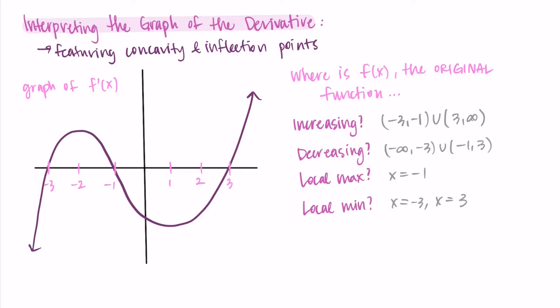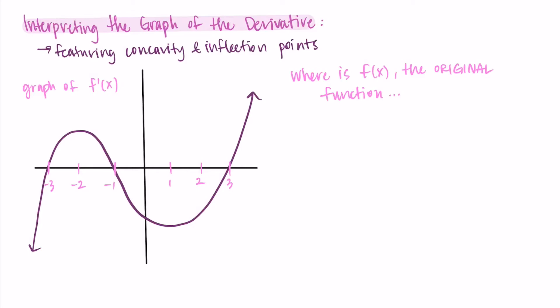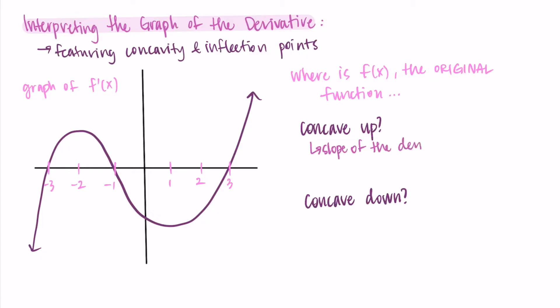That's a little review to get us started, so hopefully we haven't forgotten how the graph of the derivative helps us understand the behavior of the original function. What is new is that we want to know where the function is concave up and concave down. Remember, we have the graph of the derivative and we want to use it to find this information about the original function. Concave up means the second derivative is positive. The second derivative is the derivative of the derivative — or the slope of the derivative.